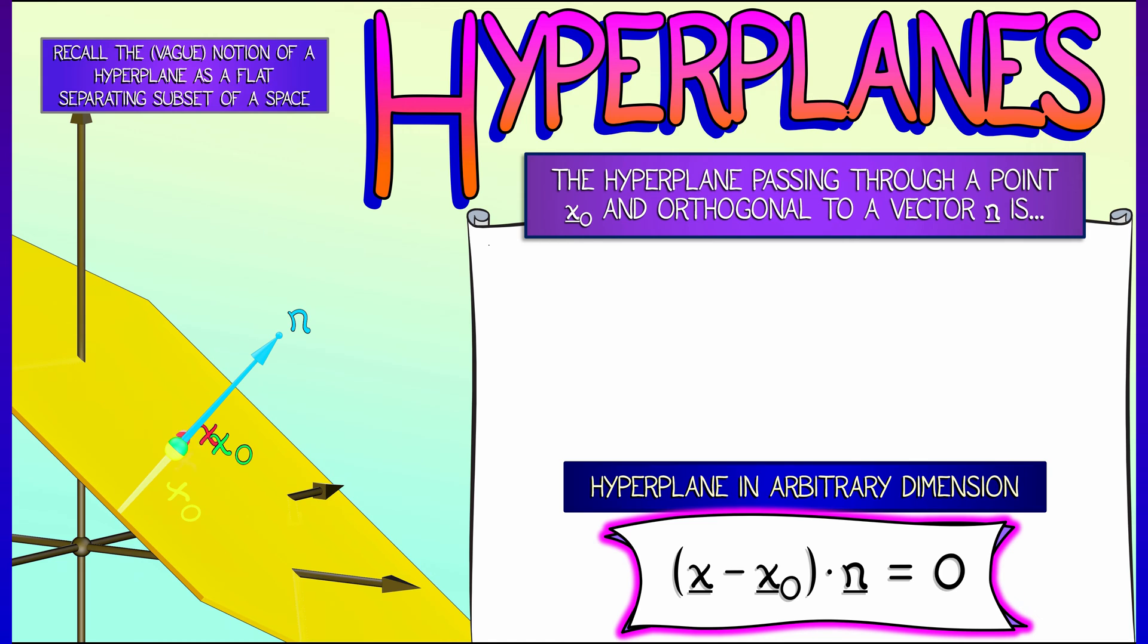If you think about it, this vector x minus x-naught being perpendicular to n is saying precisely that the dot product is zero. And this helps us make sense of certain formulae that we've looked at in the past.